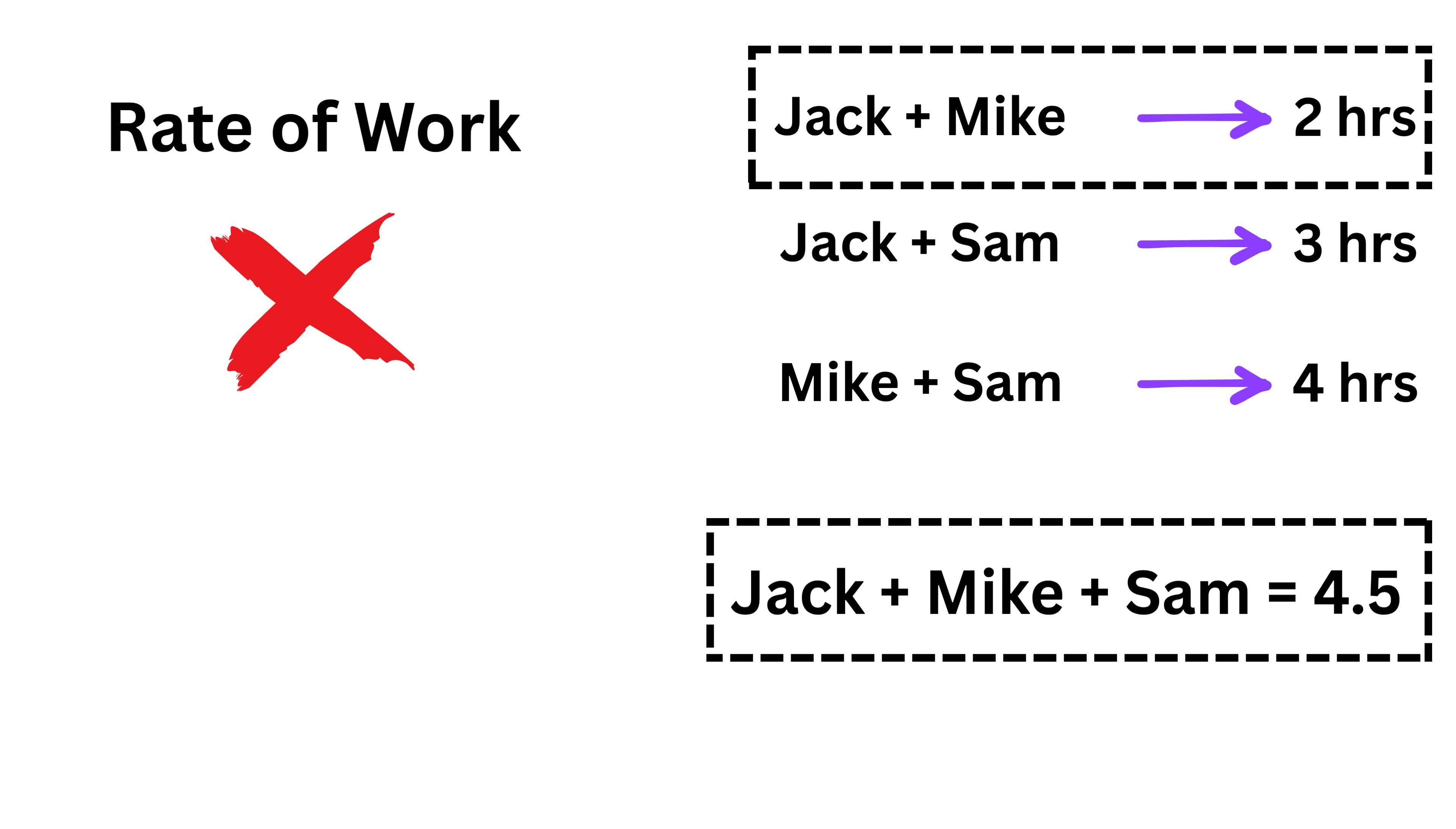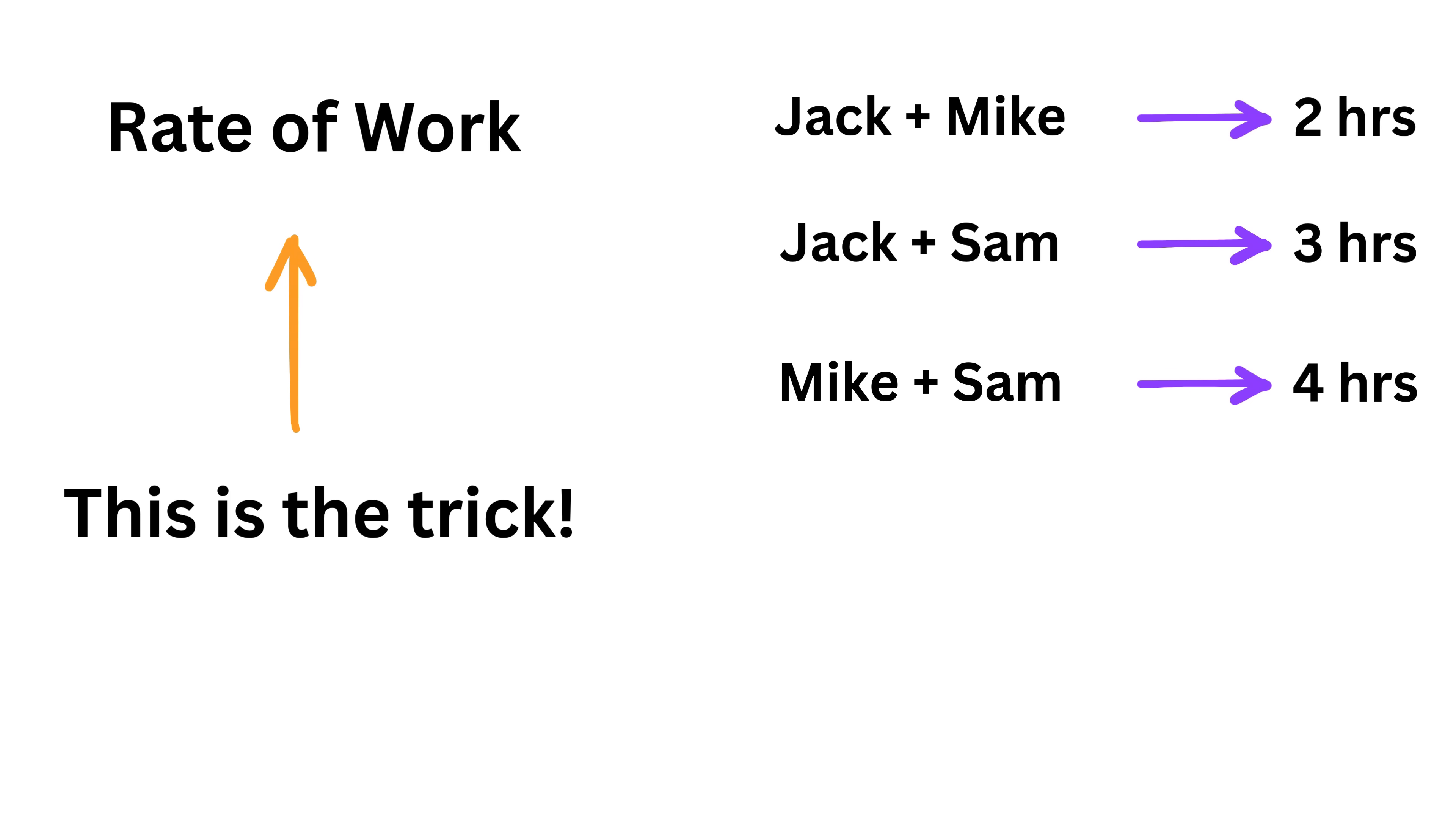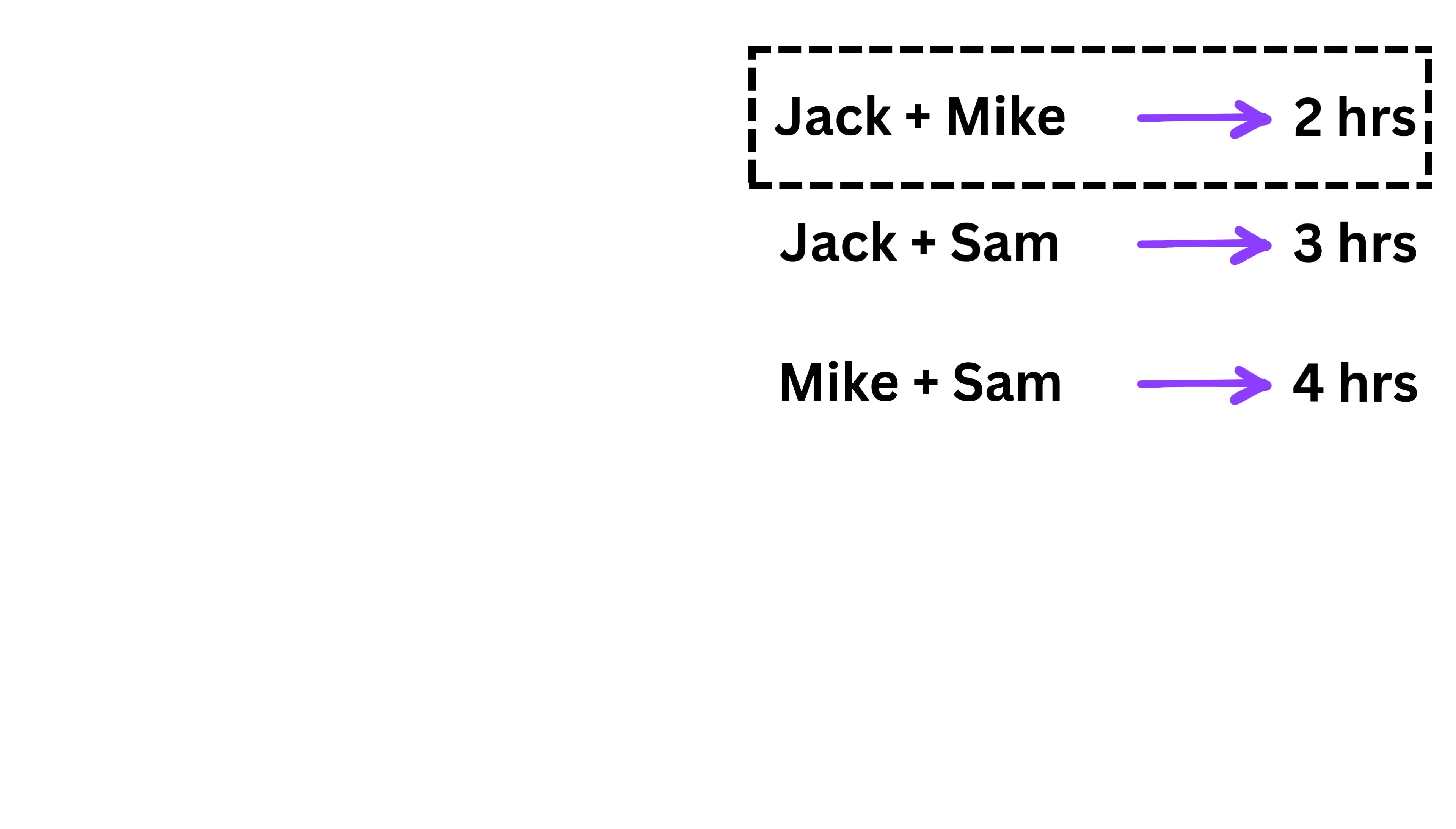Interviewees are not thinking about the rate of work. They are only thinking about the time. The times given in the problem do not simply add or subtract. The trick is to think in terms of how much of the job each person can do in one hour. So let's go step by step carefully and understand it in plain English. When the problem says Jack and Mike can do the job in two hours, that means if they both work together for two hours, they will finish one complete job. That also means in one hour, together, they will complete half of the job.